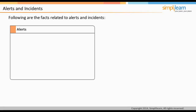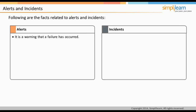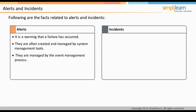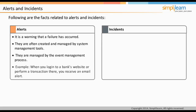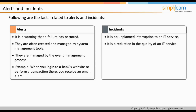Events can be classified into alerts and incidents. An alert is a warning that a failure has occurred; alerts are often created and managed by system management tools, and the event management process manages them. The objective of an alert is to notify the concerned stakeholders so that an action is taken to correct the situation — for example, when you log in to a bank's website or perform a transaction, you receive an email alert. An incident, on the other hand, is an unplanned interruption of an IT service or a reduction in the quality of an IT service. It could also be a failure of an IT component that has not yet affected the service but can disrupt it if left unchecked.